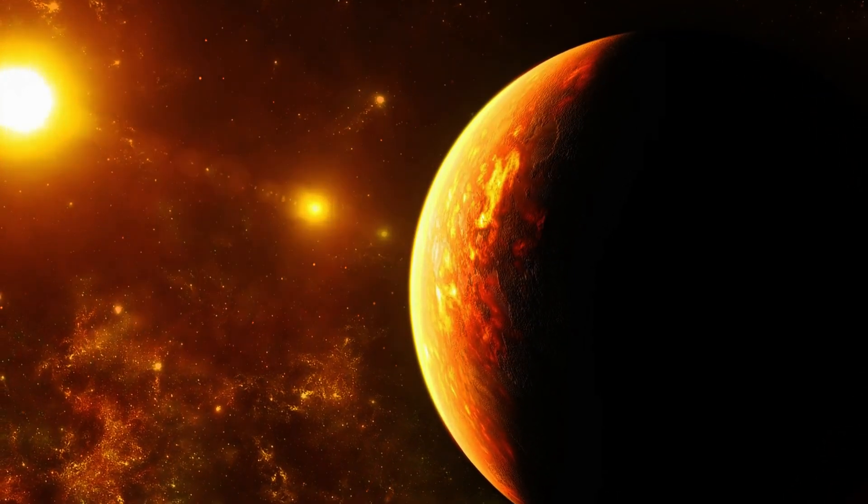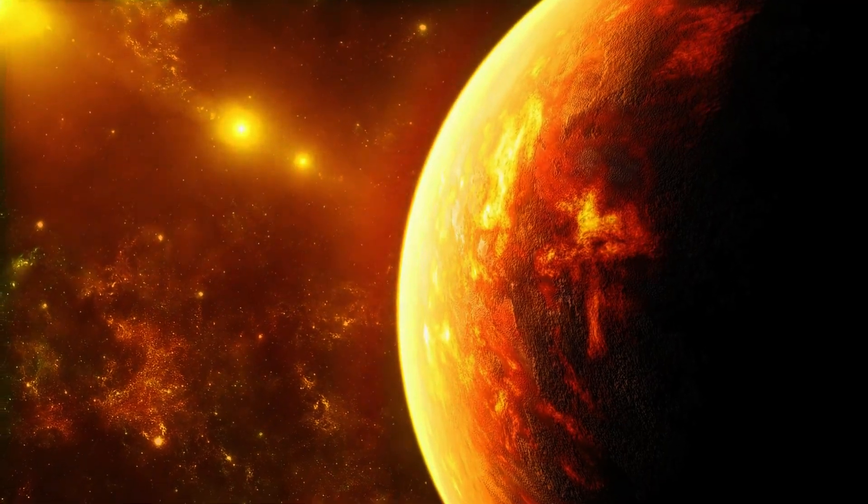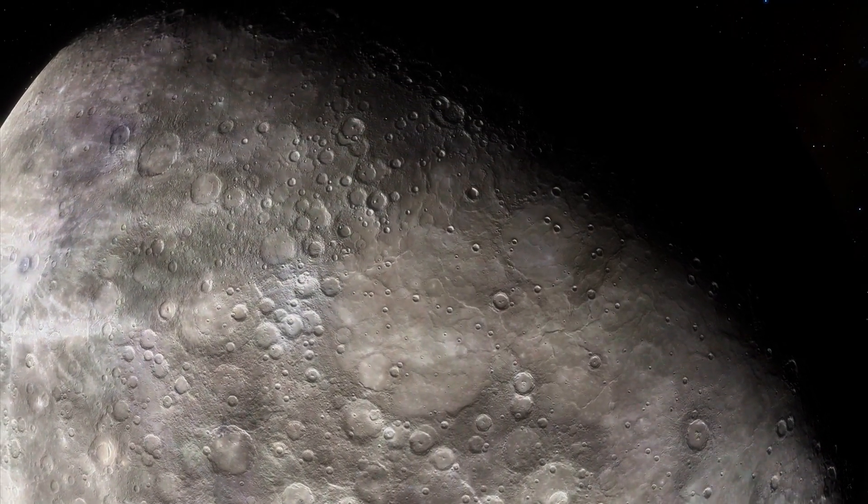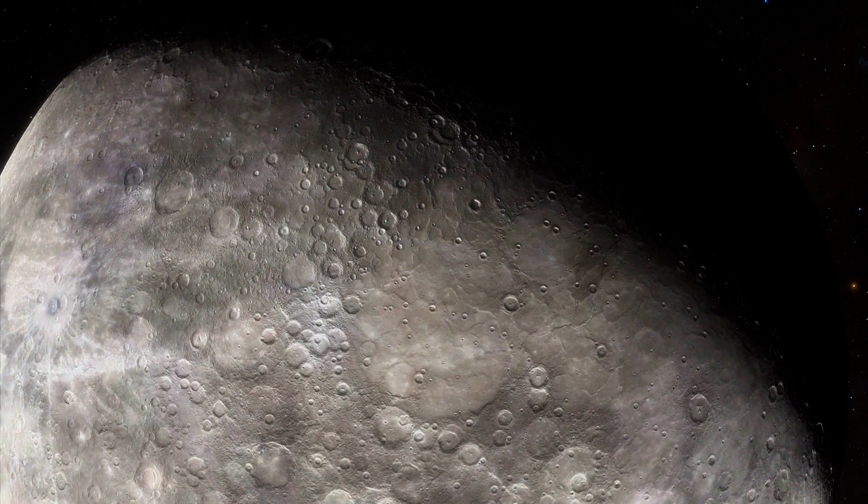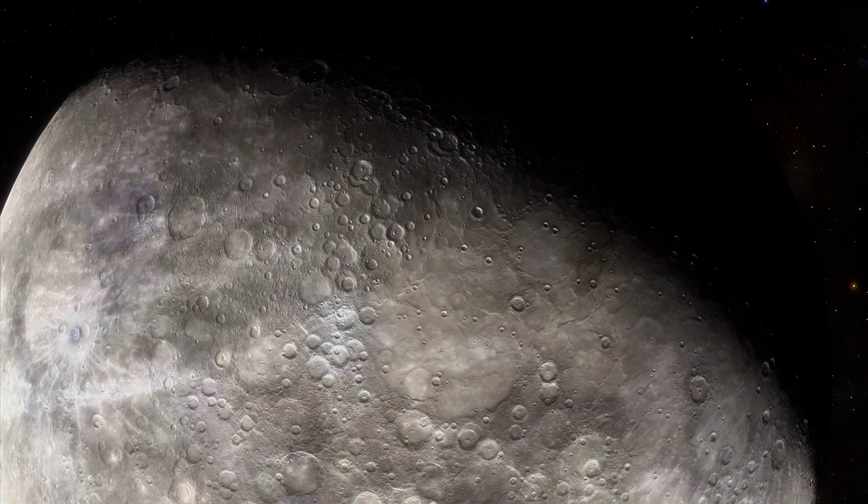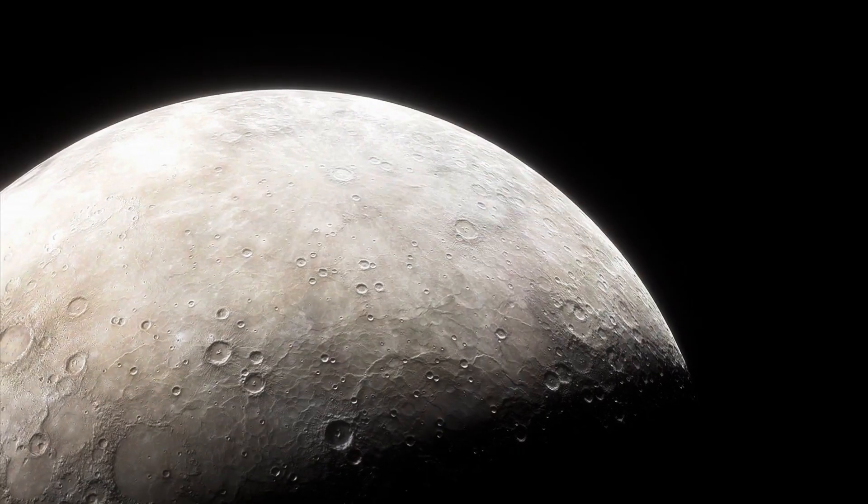In 2011, NASA's MESSENGER did the impossible. It found ice. Not in some distant comet. Here, in craters forever cloaked in shadow. Minus 297 degrees Fahrenheit. Cold enough to freeze time itself.